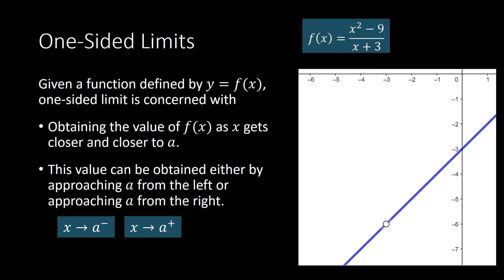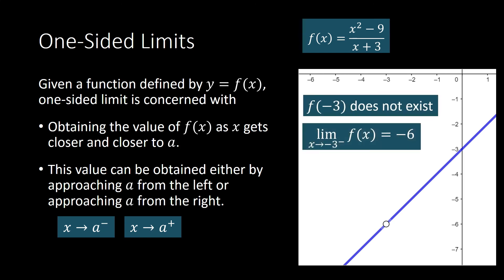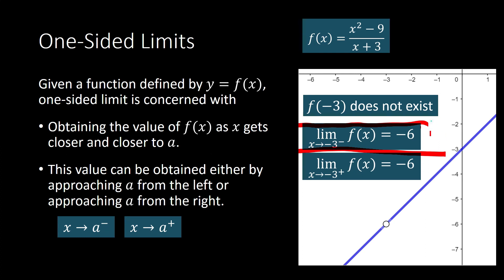F of negative 3 does not exist — it has no value when x is negative 3. But when we approach negative 3 from both the left and right, our function approaches the same real number: negative 6. This is how we write it using limit notation: the limit of f of x as x approaches negative 3 from the left is equal to negative 6, and the limit as x approaches negative 3 from the right is also negative 6. That is how we interpret one-sided limits.